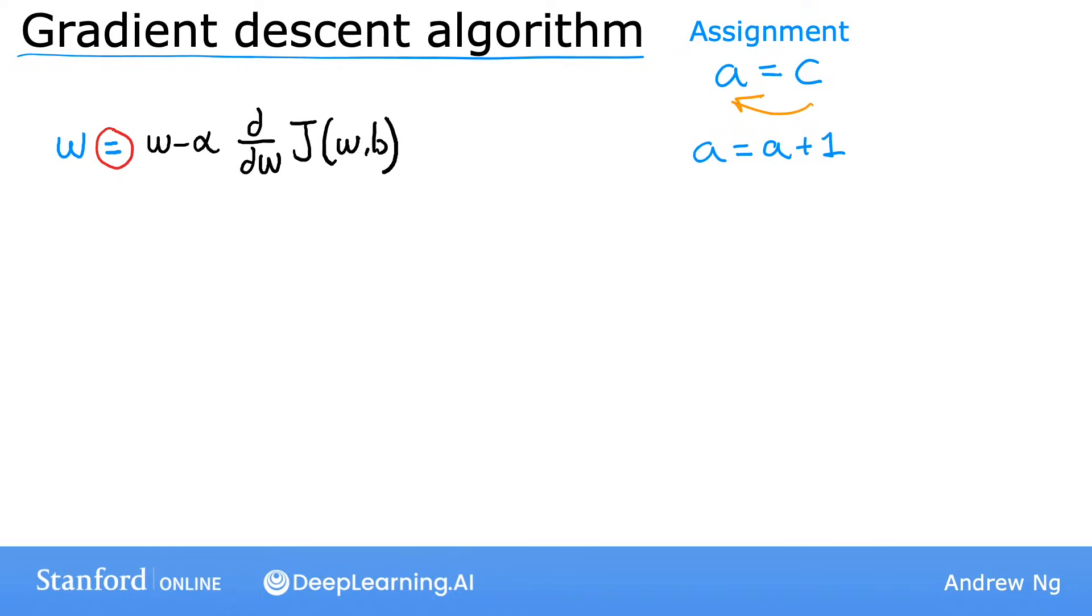it means set the value of a to be equal to a plus 1, or increment the value of a by 1. So the assignment operator in coding is different than truth assertions in mathematics, where if I write a equals c, I'm asserting, that is, I am claiming, that the values of a and c are equal to each other. And hopefully, I will never write a true assertion a equals a plus 1, because that just can't possibly be true.